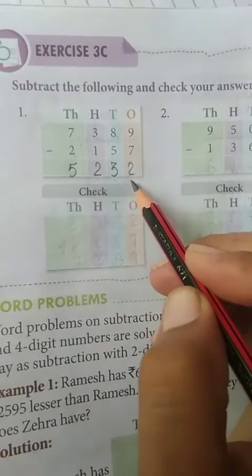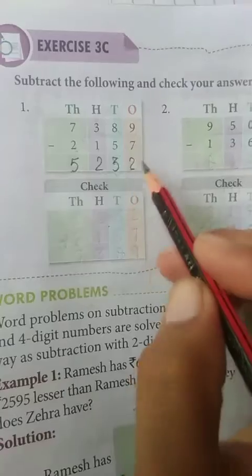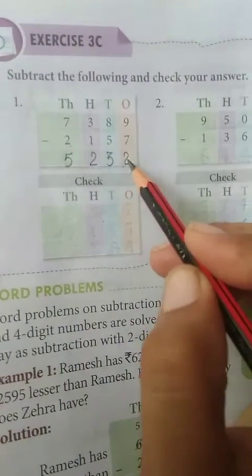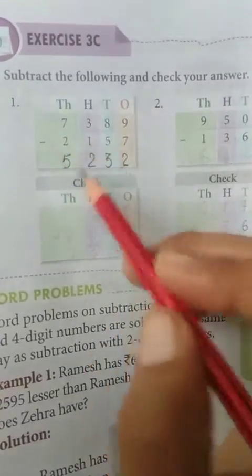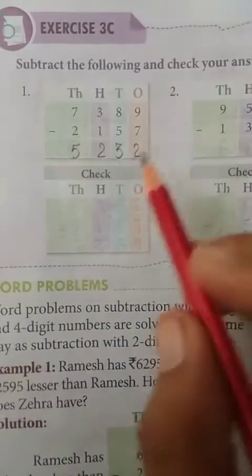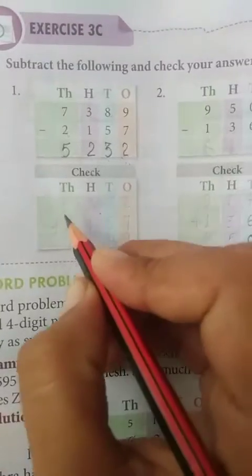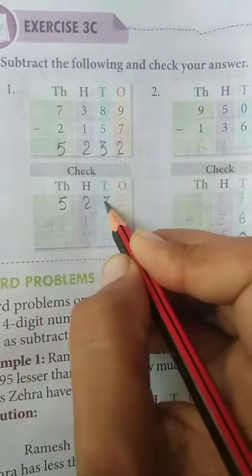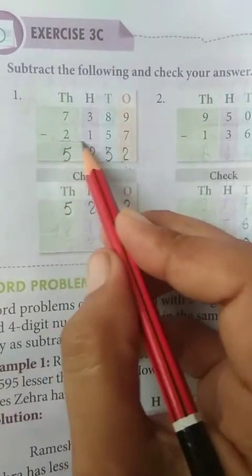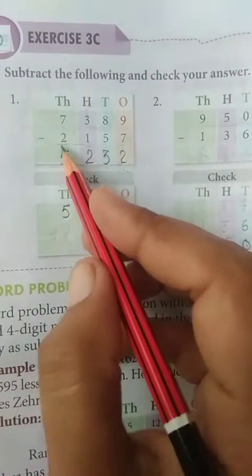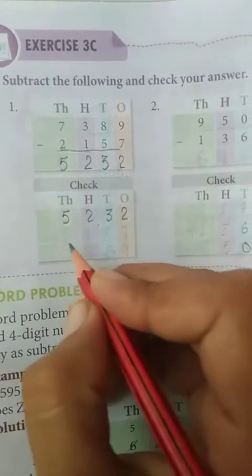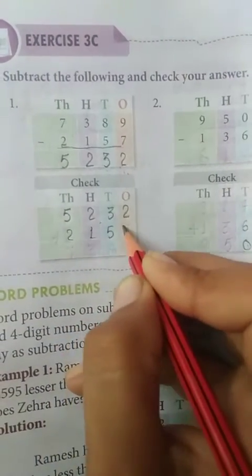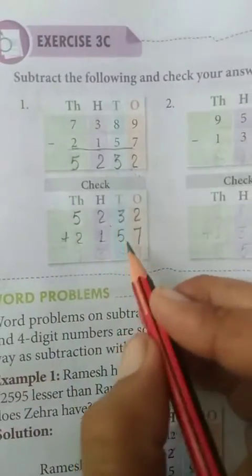Now check the answer. हमें अब क्या करना है? Answer को check करना है. This is correct or not? तो हम क्या करेंगे? जो answer है, उसे first number पर not करेंगे. 5,232. Next, हमें इस number को not करना है. 2,157. Now we will check the answer.